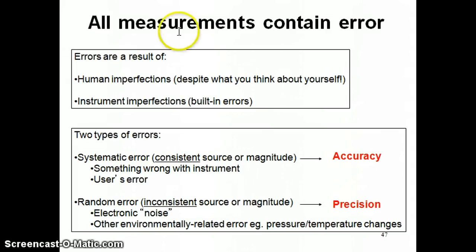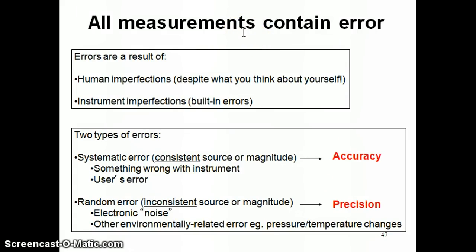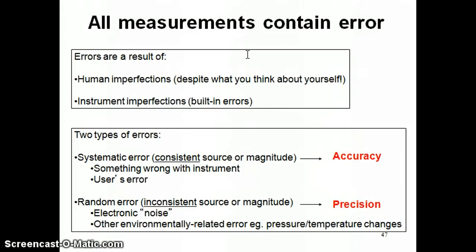First off is this idea that all measurements contain error. This is one of the things you have to keep in mind right away at the very start: when you're making a measurement, there's always an error associated with it. The only times you don't have an error is when you're counting something. So if I have five oranges in front of me, I just count one at a time, and the number five would be an exact number — there's no error in that because I'm not making any measurement, I'm just counting.